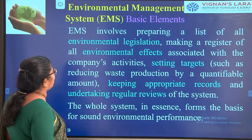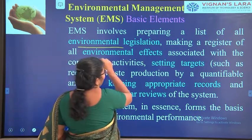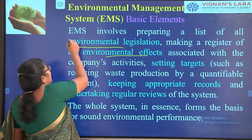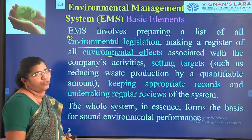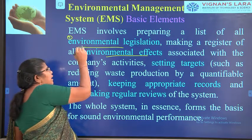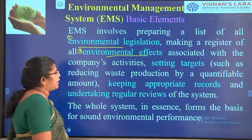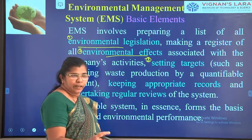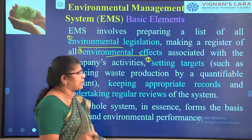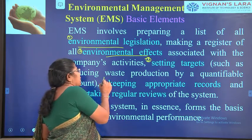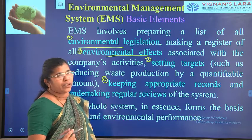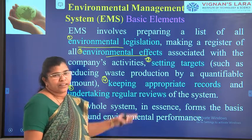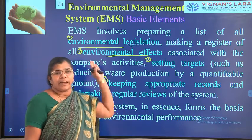EMS lists the environmental legislation and the effect of environmental impact associated with the company's activities. First, it tells what registrations must be followed by the company. Second, it identifies the effect of environmental impact on society. Third, it sets targets — for example, that environmental impact has to be reduced by 20% by end of year — and keeps appropriate records of those targets, undertaking regular reviews to achieve them.